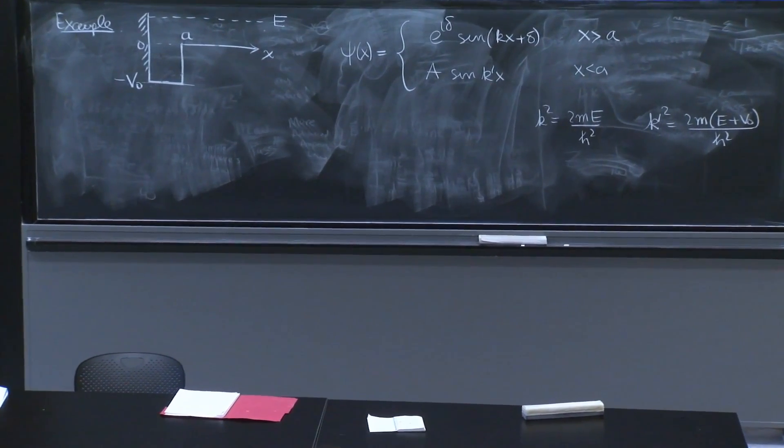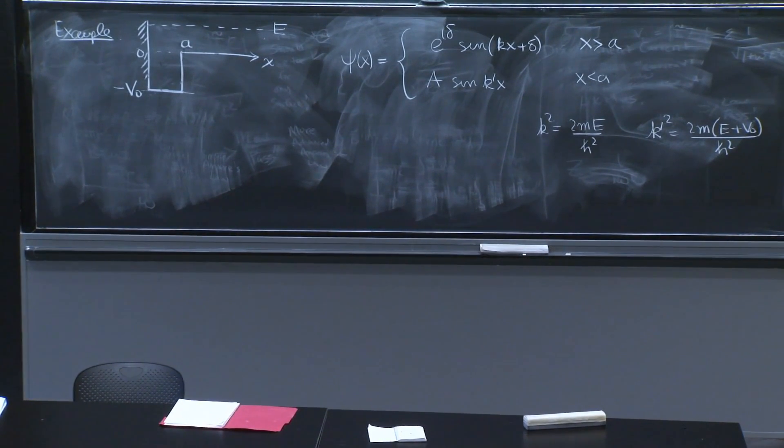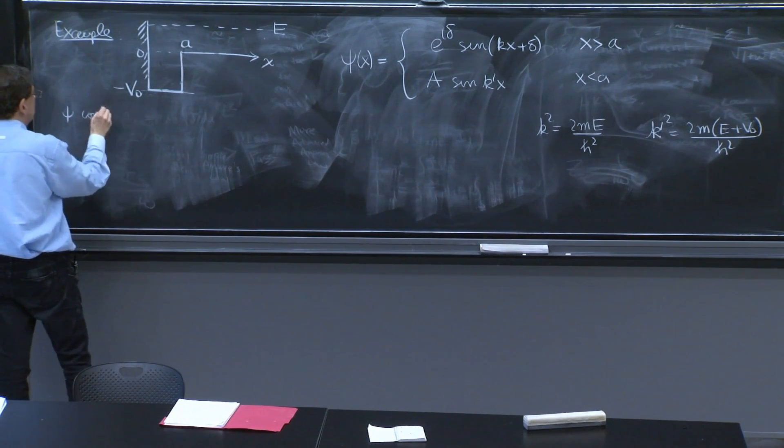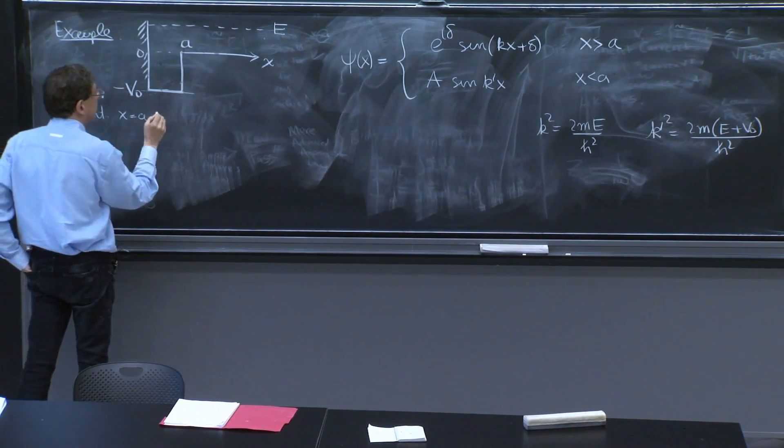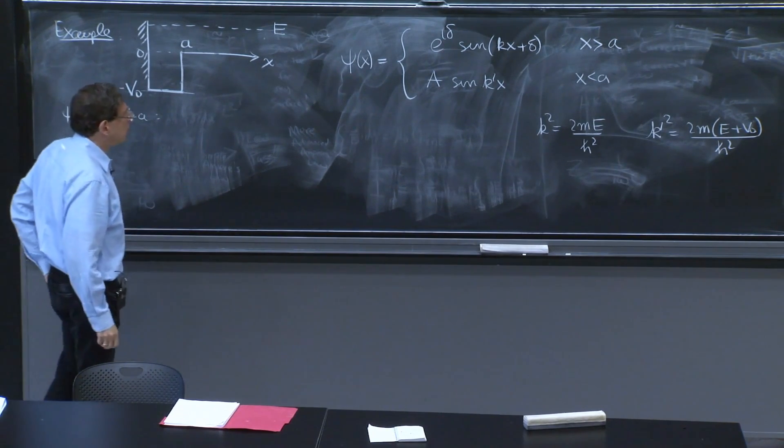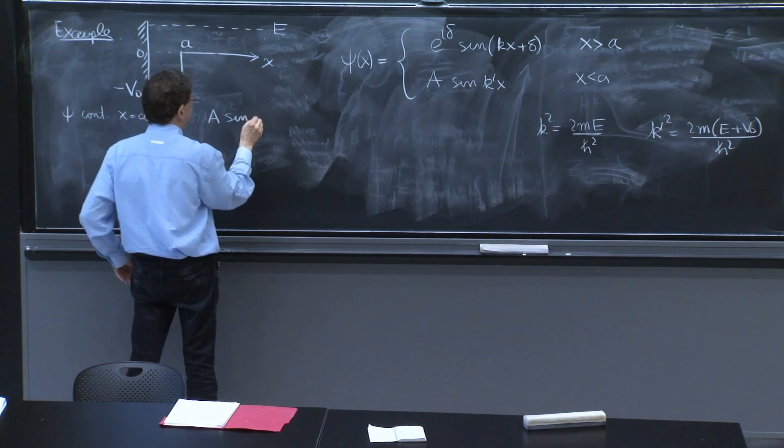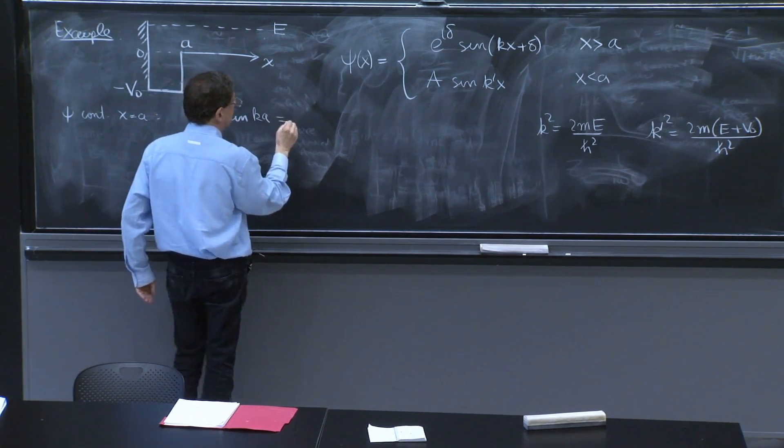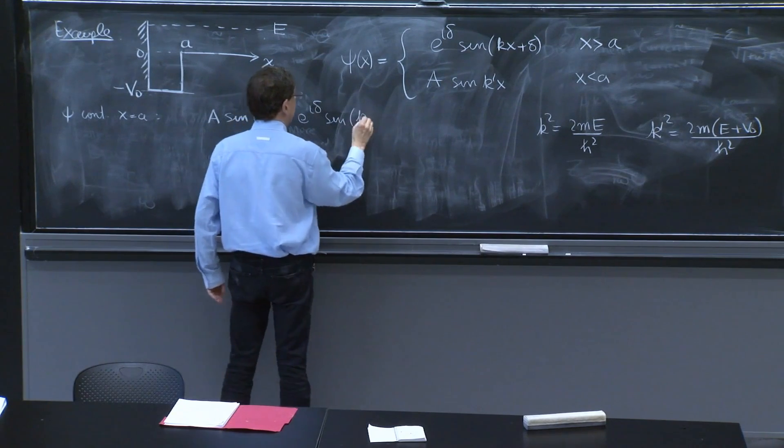Now we have boundary conditions at x equals a. So psi continuous at x equals a. What does it give you? It gives you a sine of k prime a is equal to e to the i delta sine of k a plus delta.